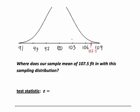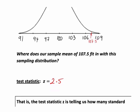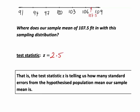In looking at where this sample mean fits in, the test statistic actually tells us how many standard errors it is above or below the hypothesized mean of 100. Here, 107.5 is actually two and a half standard errors above 100, so the test statistic z is in fact 2.5. That is, the test statistic z is telling us how many standard errors from the hypothesized population mean our actual observed sample mean is.